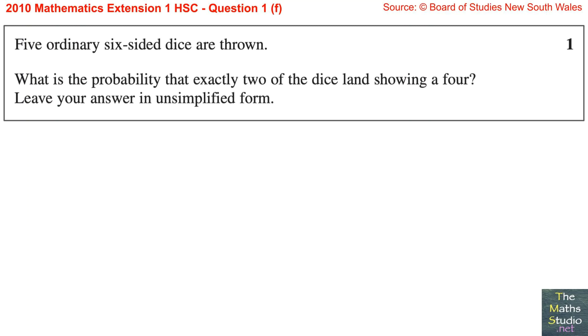Question 1, Part F. Five ordinary six-sided dice are thrown. What is the probability that exactly two of the dice land showing a four? Leave your answer in unsimplified form.